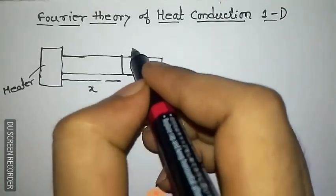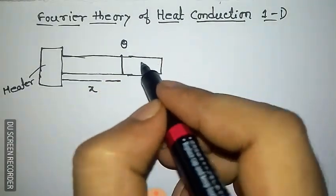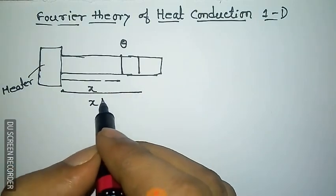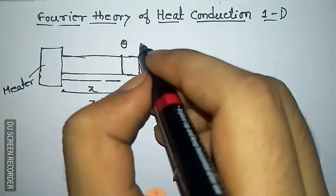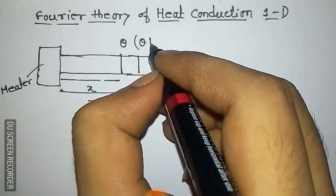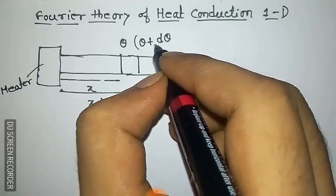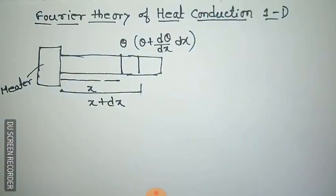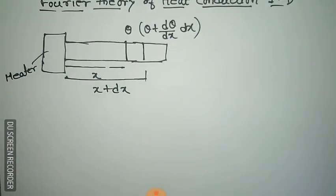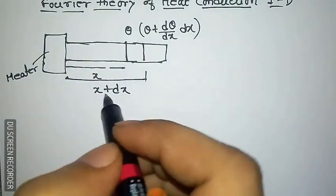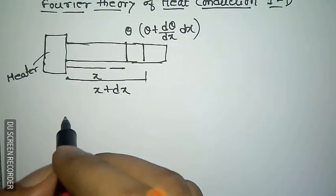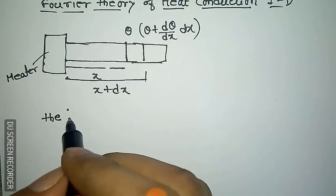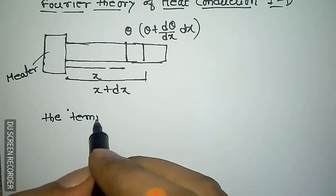Along the x-axis, at distance x the temperature is theta. At x plus dx the temperature is theta plus (d theta / dx) into dx. Now at x, the temperature gradient at point x would be d theta / dx.